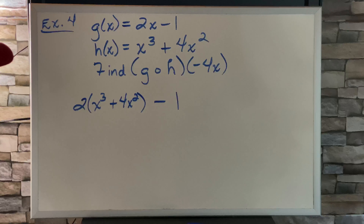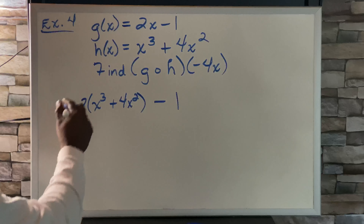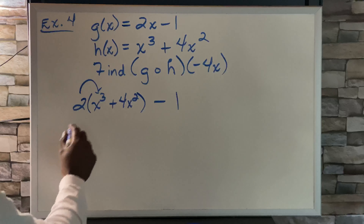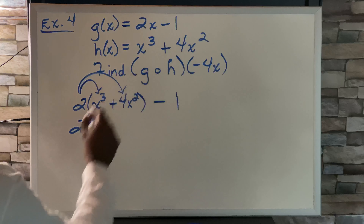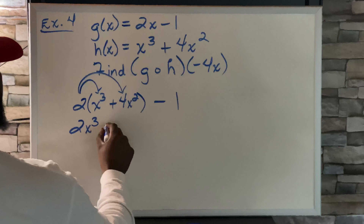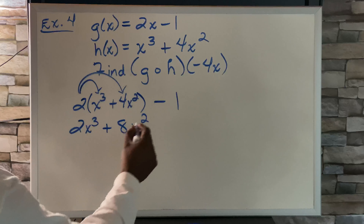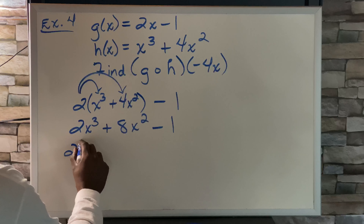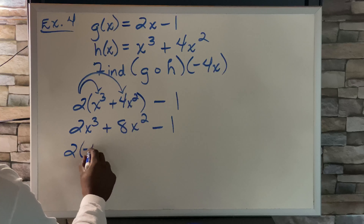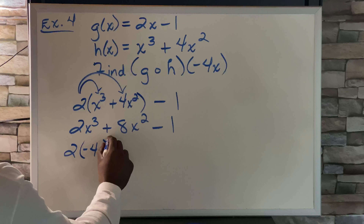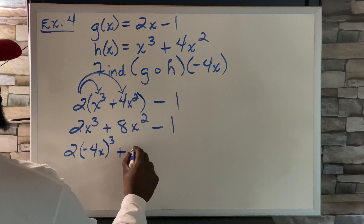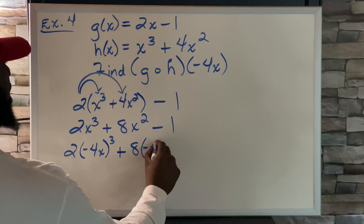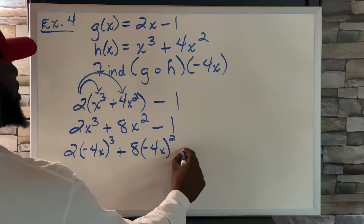Now we have a number on the outside of parentheses, so we distribute. 2 times x cubed is 2x cubed; 2 times 4x squared is 8x squared. Bring down the minus 1. Now we still have negative 4x to plug in, so we get 2 times negative 4x cubed, plus 8 times negative 4x squared, minus 1.